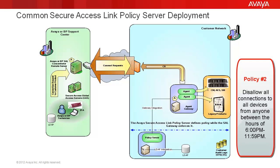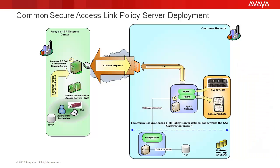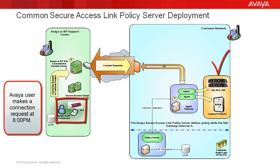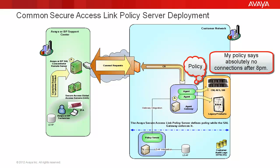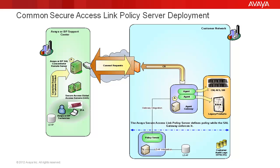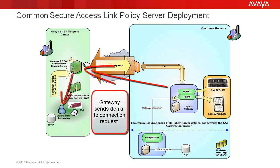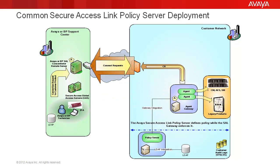Moving on to our second scenario, policy 2 states that we are to restrict access from anyone during the hours of 6 p.m. to 11:59 p.m. from connecting to any of our systems due to a scheduled testing period. Let's assume again that the connection request is coming from someone at Avaya and they are attempting to connect to our CM server at 8 p.m. in the evening. When the connection attempt comes across, the SAL gateway will again check its policy and see that there is a policy in place restricting access to all devices during this time period. So, just like our earlier scenario, our SAL gateway sends a message back to the SAL concentrator remote server advising the user that a defined policy has restricted access and cannot set up the connection.